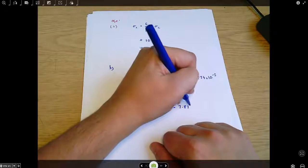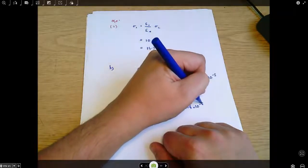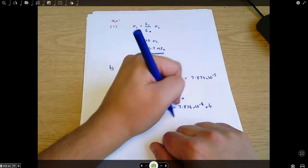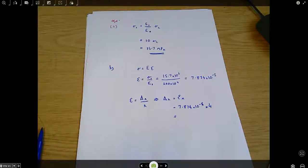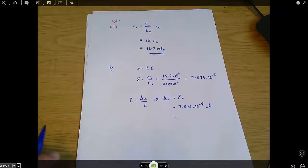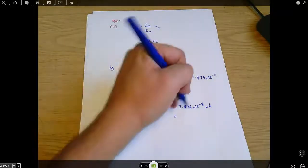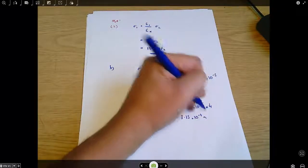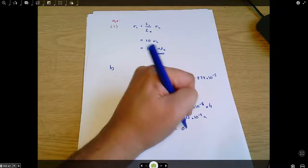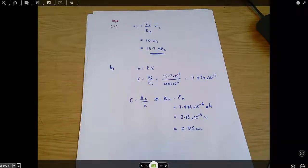7.874 times 10 to the minus 5 multiplied by 4 meters, which comes out as 3.15 times 10 to the minus 4 meters. And that's 0.315 millimeters if you prefer it in another way.